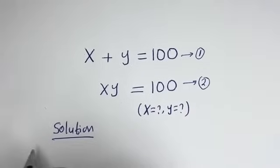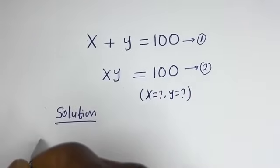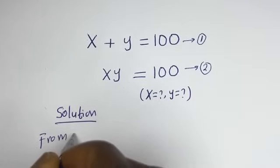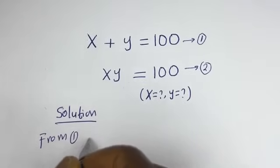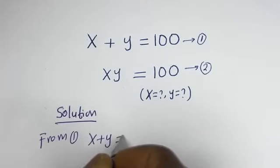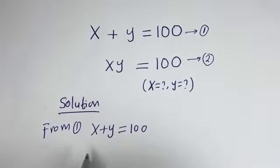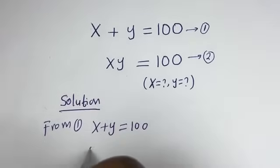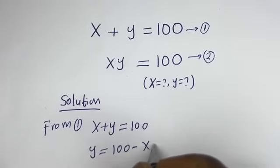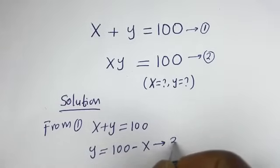Then from equation 1, x plus y is equal to 100, so y is equal to 100 minus x. Let's call this equation 3.